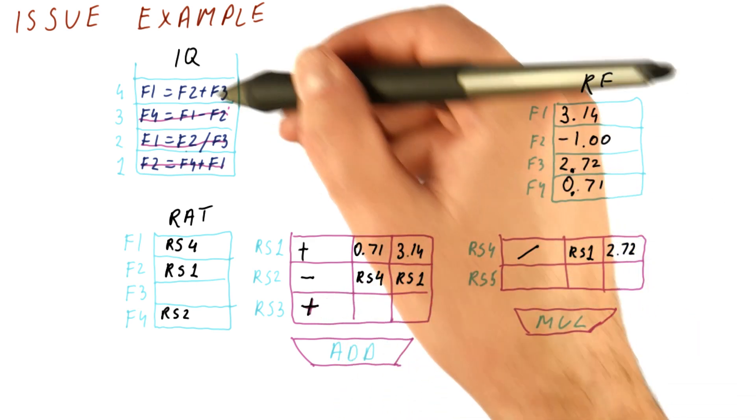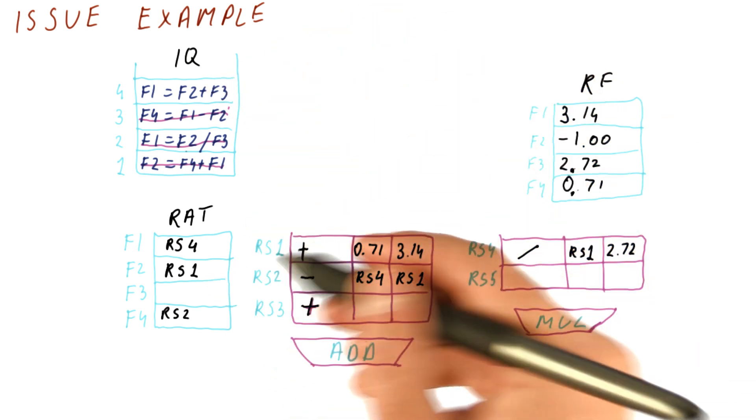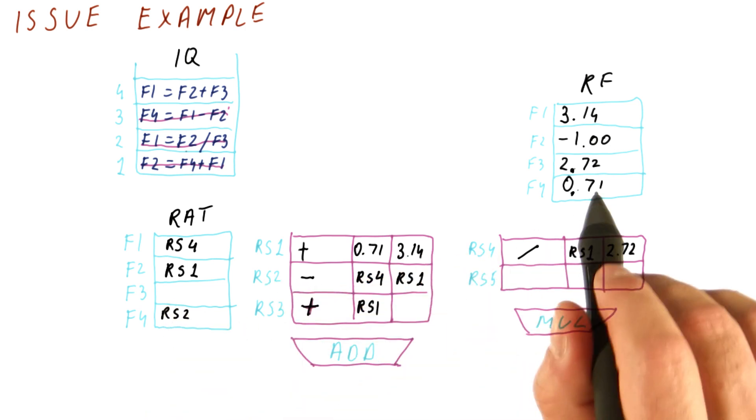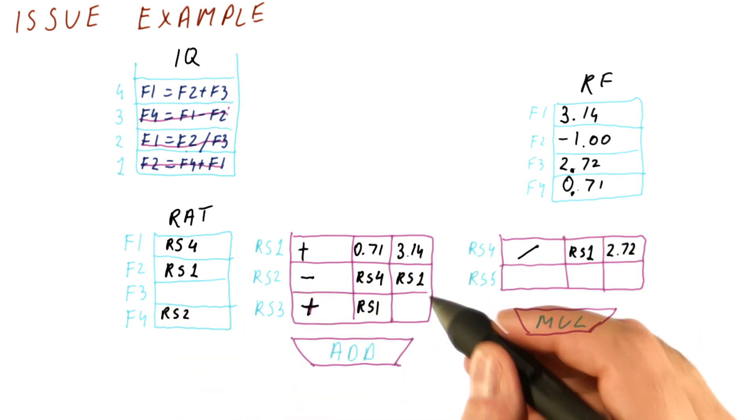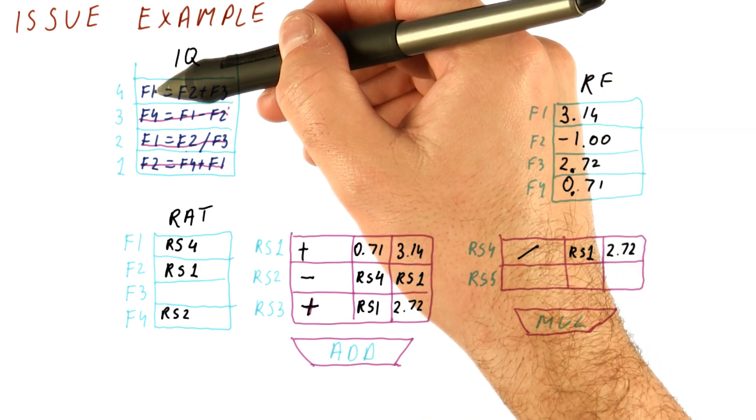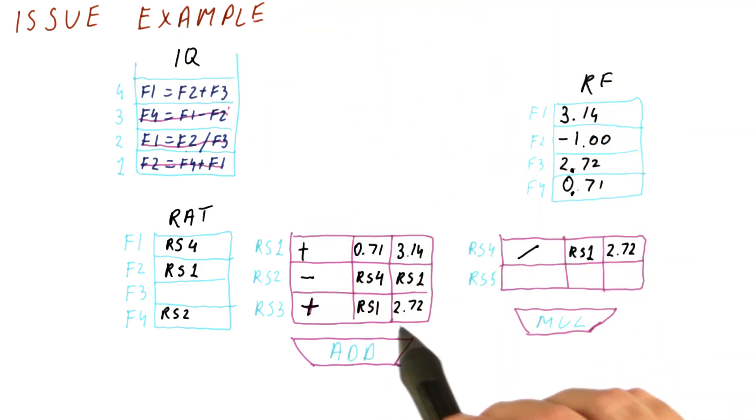Let's issue it now because we do have room for it. It's an addition of F2 and F3. F2 comes from reservation station 1. F3 comes from the register file, so we're just going to take the 2.72.